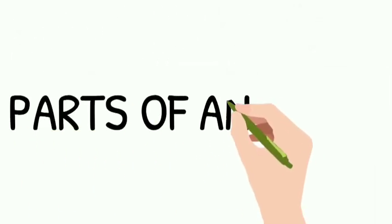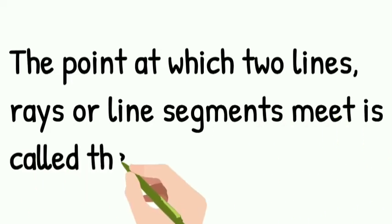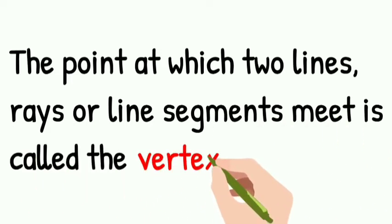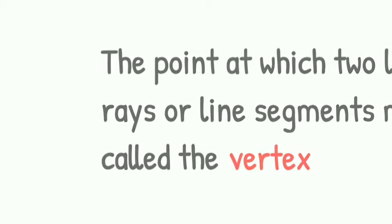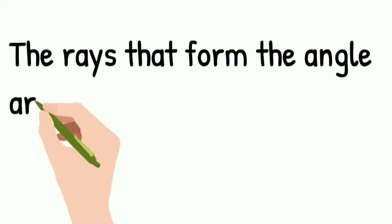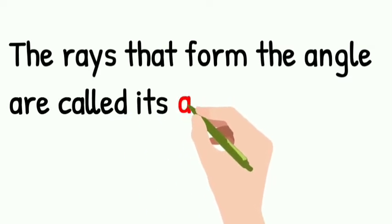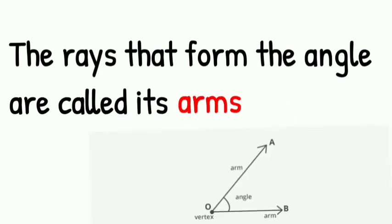Now let us learn about the parts of an Angle. The point at which two lines, rays, or line segments meet is called the vertex. The rays that form the Angle are called its Arms.